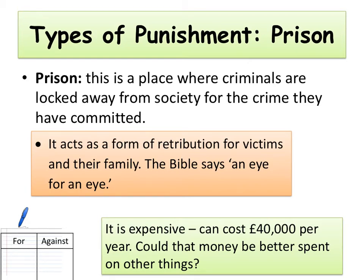Prison is expensive — it can cost £40,000 per year per inmate. That money could potentially be better spent on other things such as the NHS or education. You could also argue that it would be better spent on preventing the causes of crime in the first place — for example, trying to get rid of poverty in particular areas.